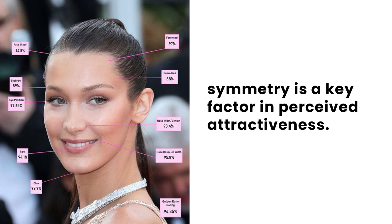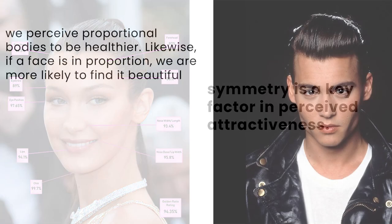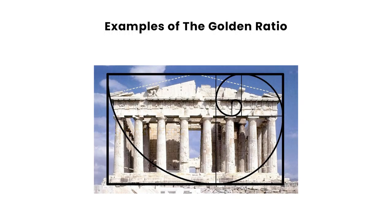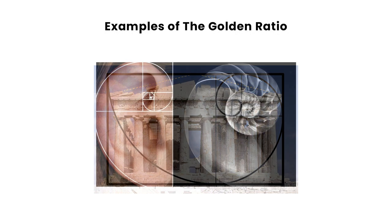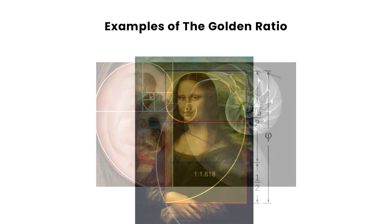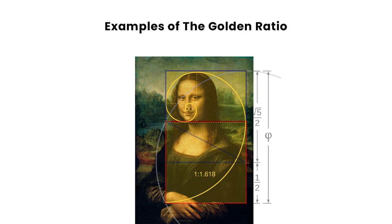This proves symmetry to be a key factor in perceived attractiveness. Some scientists believe that we perceive proportional bodies to be healthier. Likewise, if a face is in proportion, we are more likely to find it beautiful. Others think that we perceive a face as more aesthetically appealing when it conforms to the golden ratio because the human eye can process it faster, causing our brain to feel pleased. The golden ratio is not just observed in humans — it is used in architecture and artwork, and it also occurs in nature in the patterns of sunflowers, pine cones, seashells, and other plants and animals.